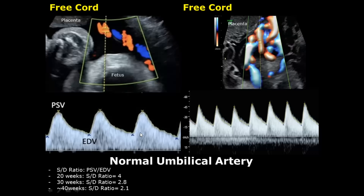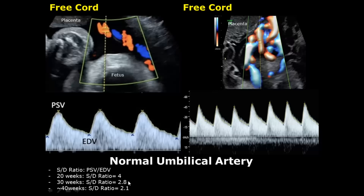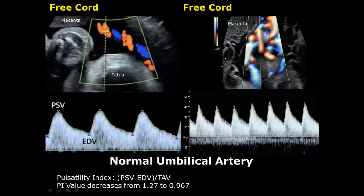In certain maternal conditions such as diabetes mellitus or hypertension, or if we suspect fetal growth restriction, a Doppler study may be performed in the second trimester. The normal S/T ratio at 20 weeks is 4, and by 30 weeks it is 2.8, and it further decreases to 2.1 at around 39 to 40 weeks. This shows us that blood flow resistance decreases over time.